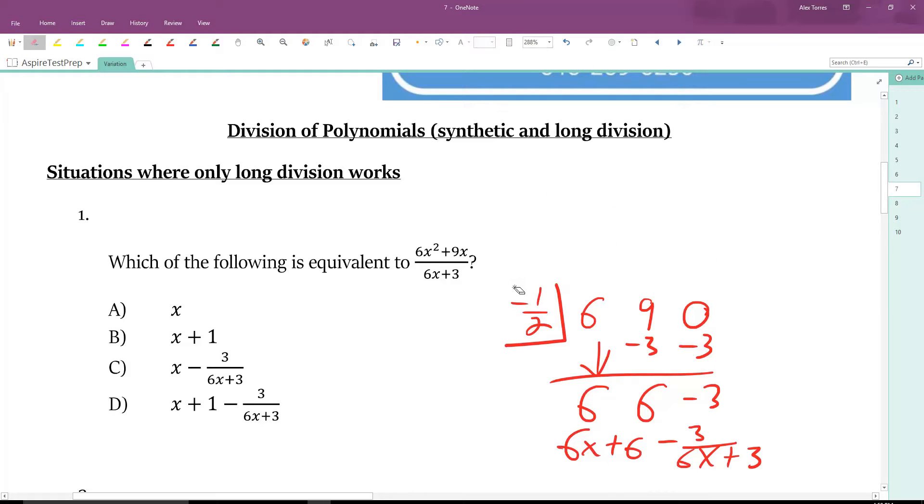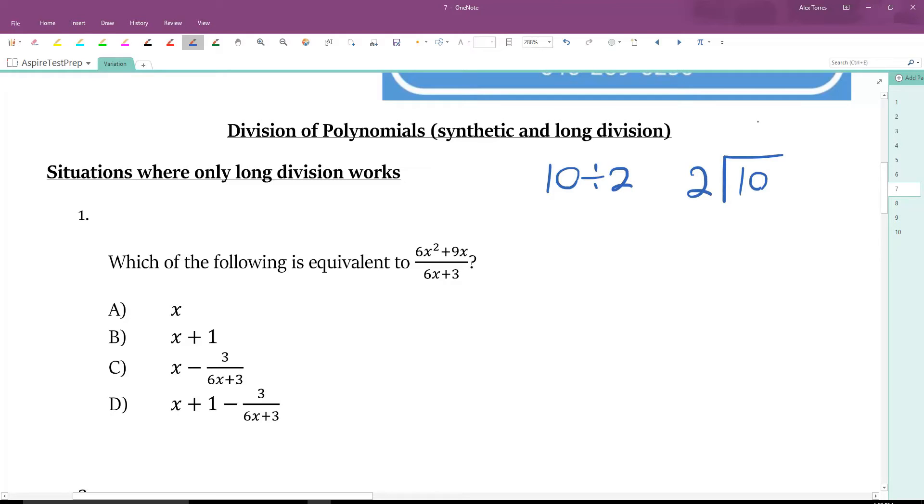So we want to be well versed on how to do synthetic, which we're going to talk about more later, and also long division. Long division says, well for instance, if I had 10 divided by 2, in classic long division that's 10 divided by 2. And the answer would be 5, because 2 times 5 is 10, and here you subtract, and you get 0.